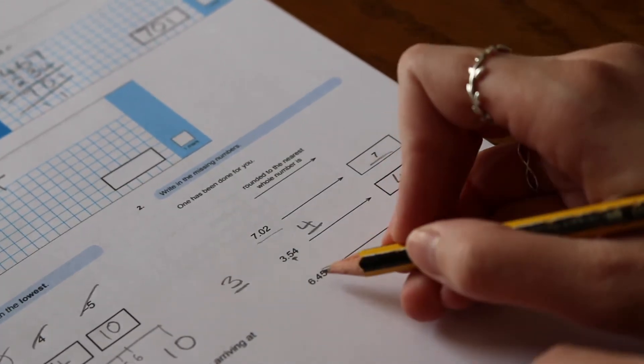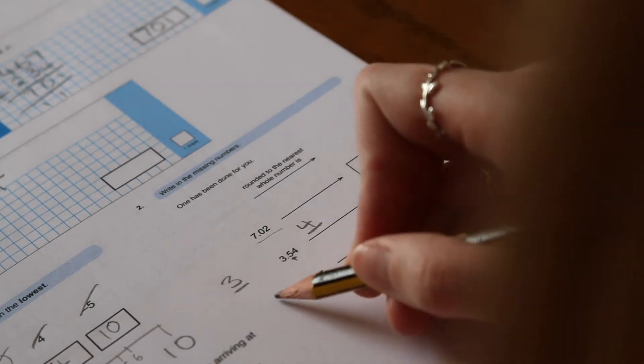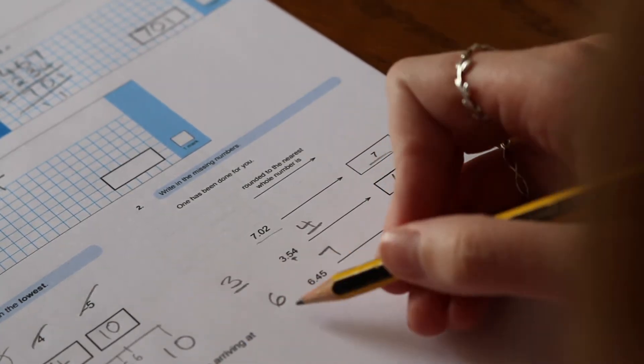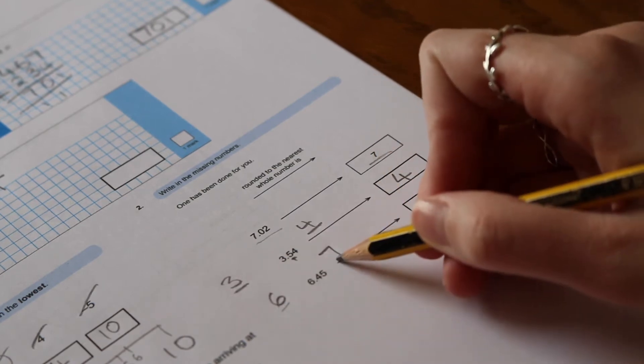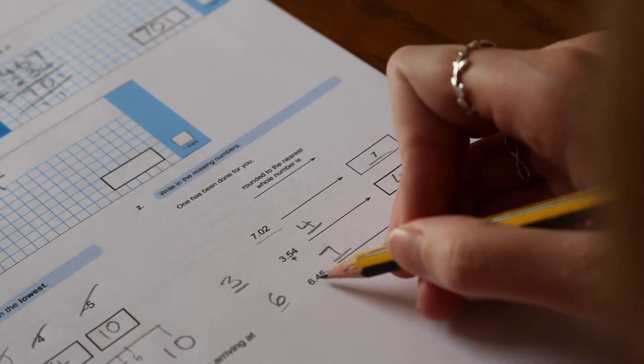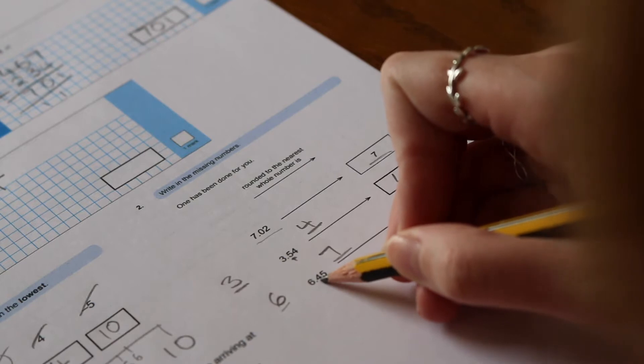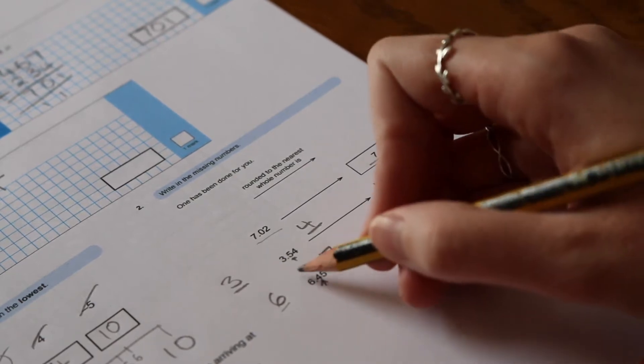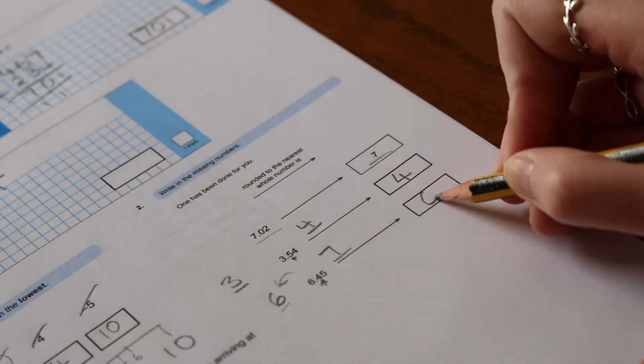Next one, 6.45. Again that number sits between 6 and 7. If we're rounding down we're going to 6, if we're rounding up we're going to 7. 6.45, we look at again that number in the tenths column—it's a 4—so we know that we are rounding down to 6.